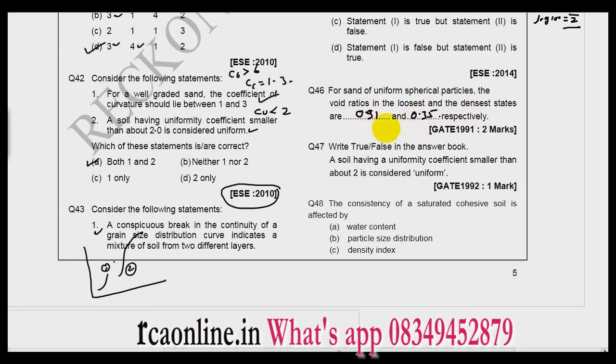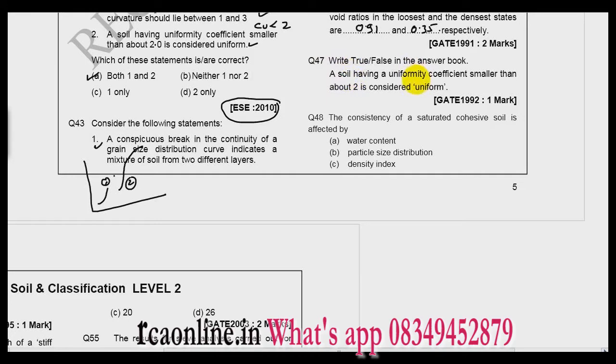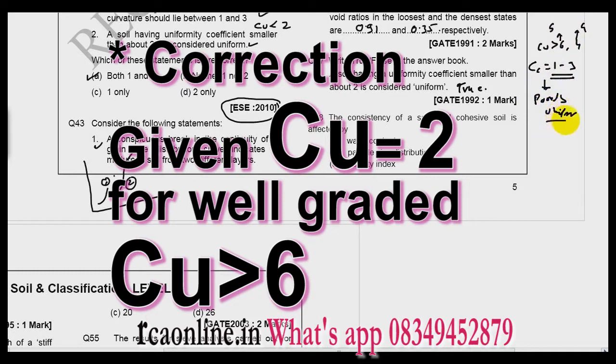Question number 47: A soil having a uniformity coefficient smaller than about 2 is considered uniform. Yes, it is true. Good question. Again see, if Cc lies between 1 and 3 and other things Cu either 6 or 4, then the soil will be well graded sand or gravel. But if Cc does not lie between 1 and 3, then automatically the soil will become poorly graded or uniformly graded. Both have same meaning, so this statement says the same thing. So this is correct, true.